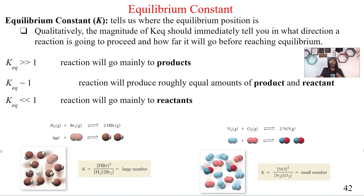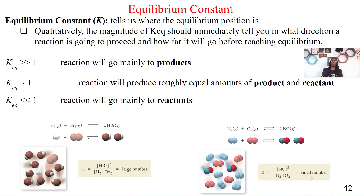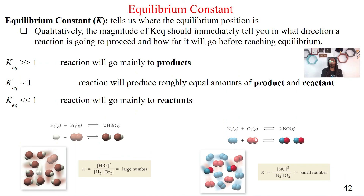There are certain reactions that are just hard to produce products, so the equilibrium mainly stays on the reactants side — and this is an example of one. We can use the equilibrium constant to determine these things. If I calculate K and it's a small number, that tells me my reaction is mainly going toward reactants. If it's a big K, we're going mainly toward products. This is how equilibrium constants can be very helpful going forward.